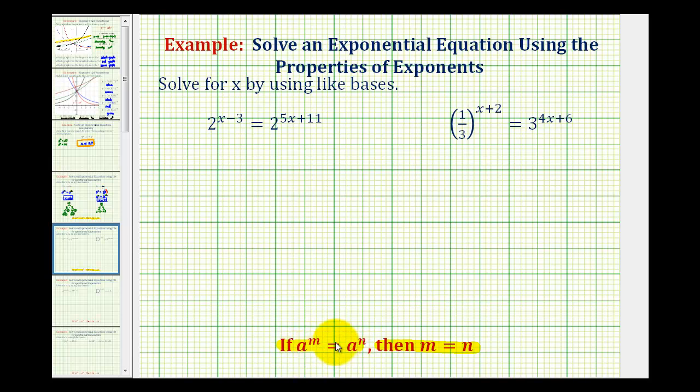So looking at our first equation, we have 2 raised to the power of x minus 3 equals 2 raised to the power of 5x plus 11. Since our bases are the same and these are equal to each other, x minus 3 must equal 5x plus 11.